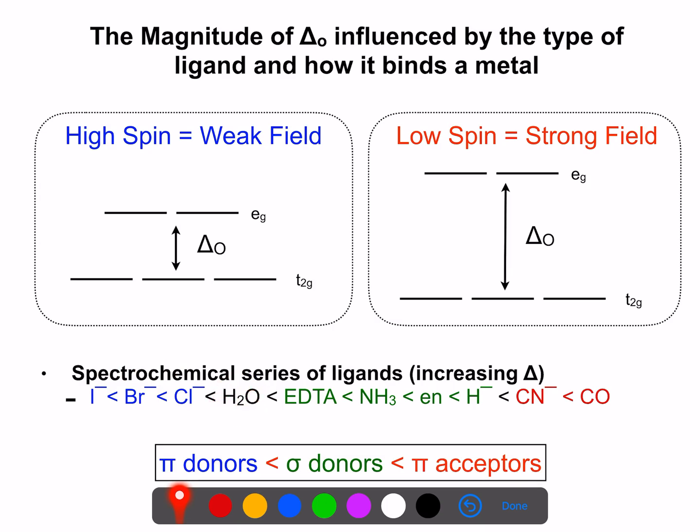Then we have ligands that are sigma-donor-only ligands, things like EDTA, ammonia, ethylenediamine, and hydride. These are good sigma donors, and the ability of them to sigma-donate - the better sigma-donor you are, the stronger field ligand you are. And then at the top of the spectrochemical series, what we have is pi-accepting ligands. And notice here we have pi-accepting ligands are cyanide and carbon monoxide.